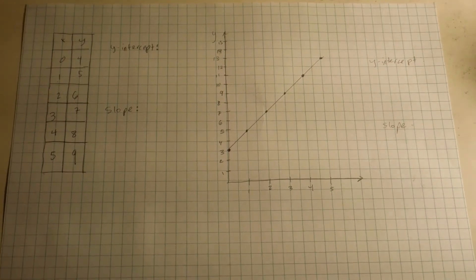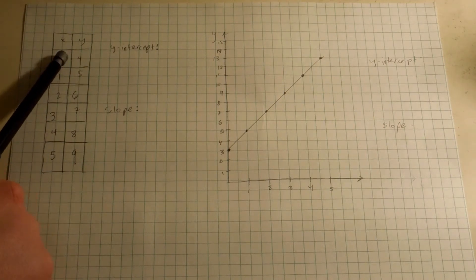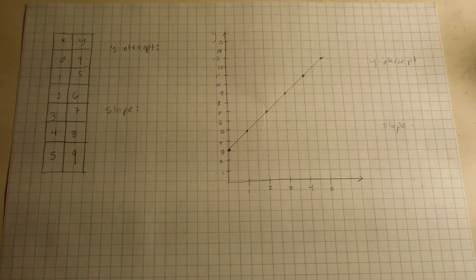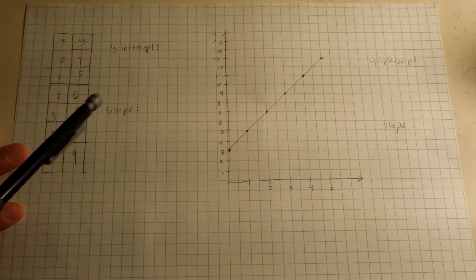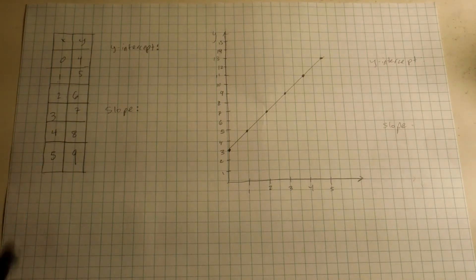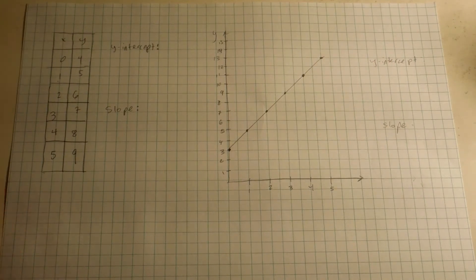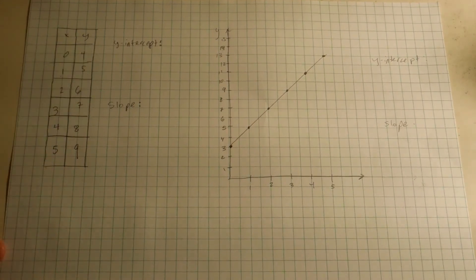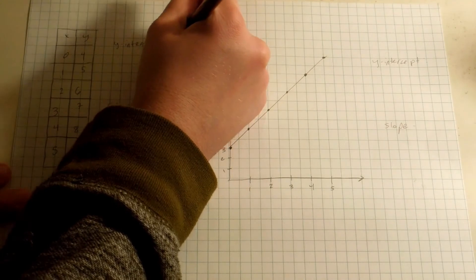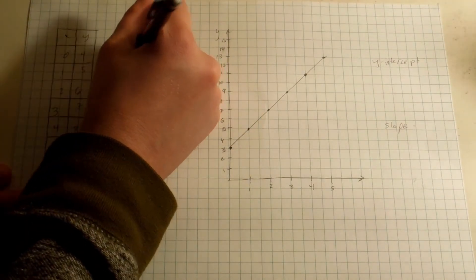Remember, the y-intercept is where x equals 0. So in the table, let's find the spot where x equals 0, right here. This time we have a different looking table — the x's are on the left and the y's are on the right. All the x's on the left are connected to their y's on the right, left and right. So we found where x equals 0. The y that goes with it is the one to the right of it. So the y-intercept is 4. You can also write that point as 0 comma 4.